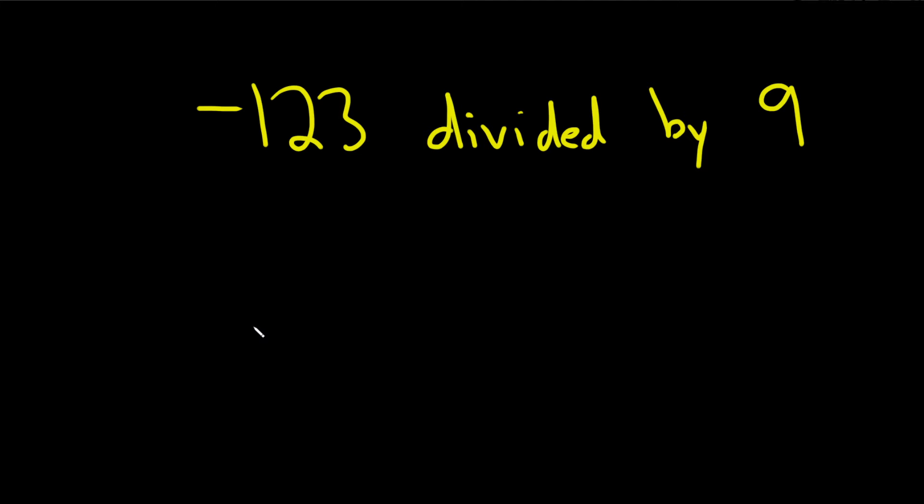Negative 123 divided by 9. In this problem, we're being asked to use the division algorithm to find the quotient and the remainder.